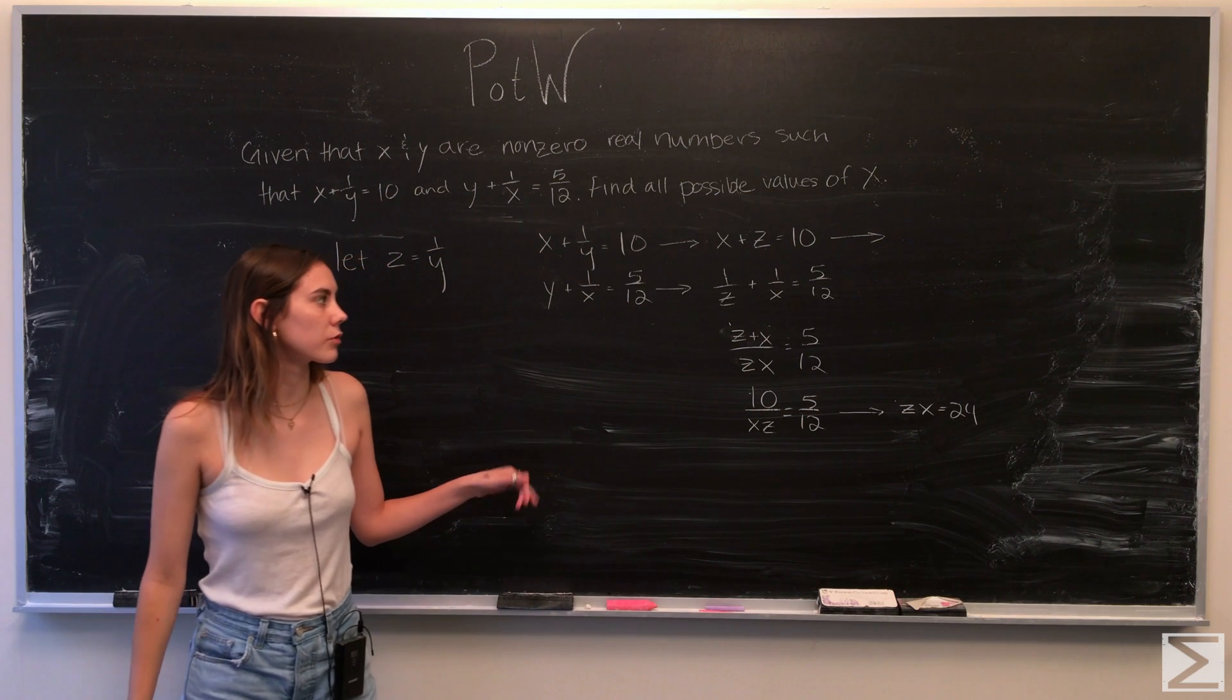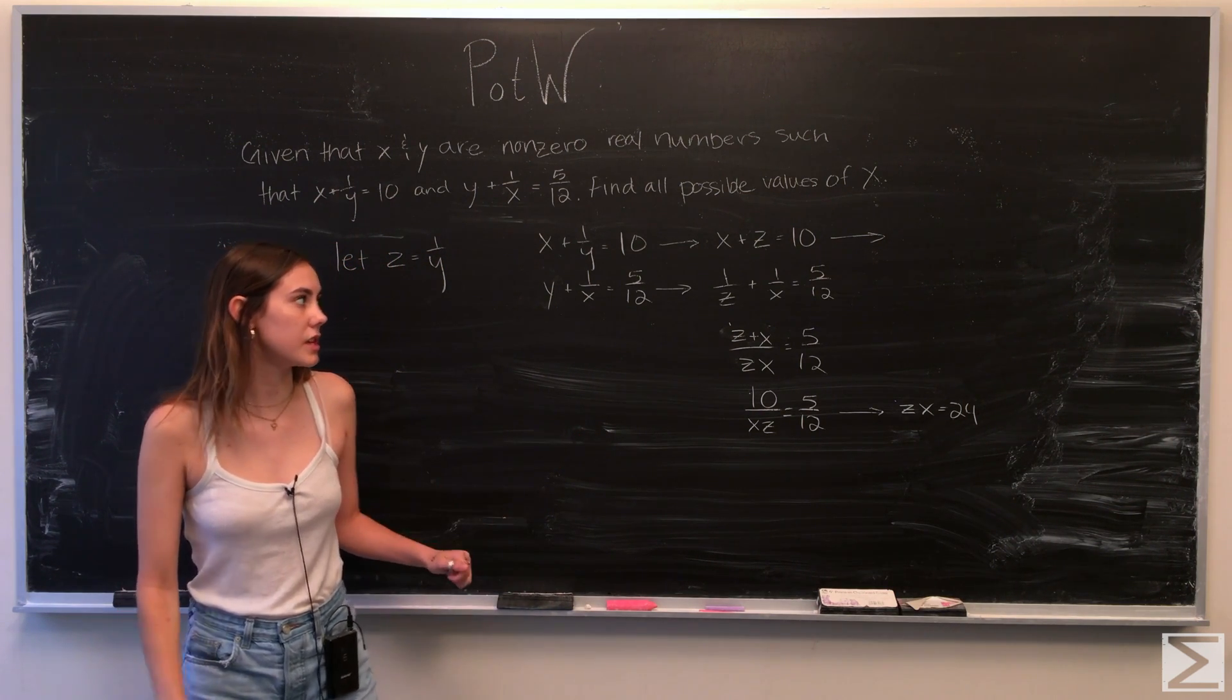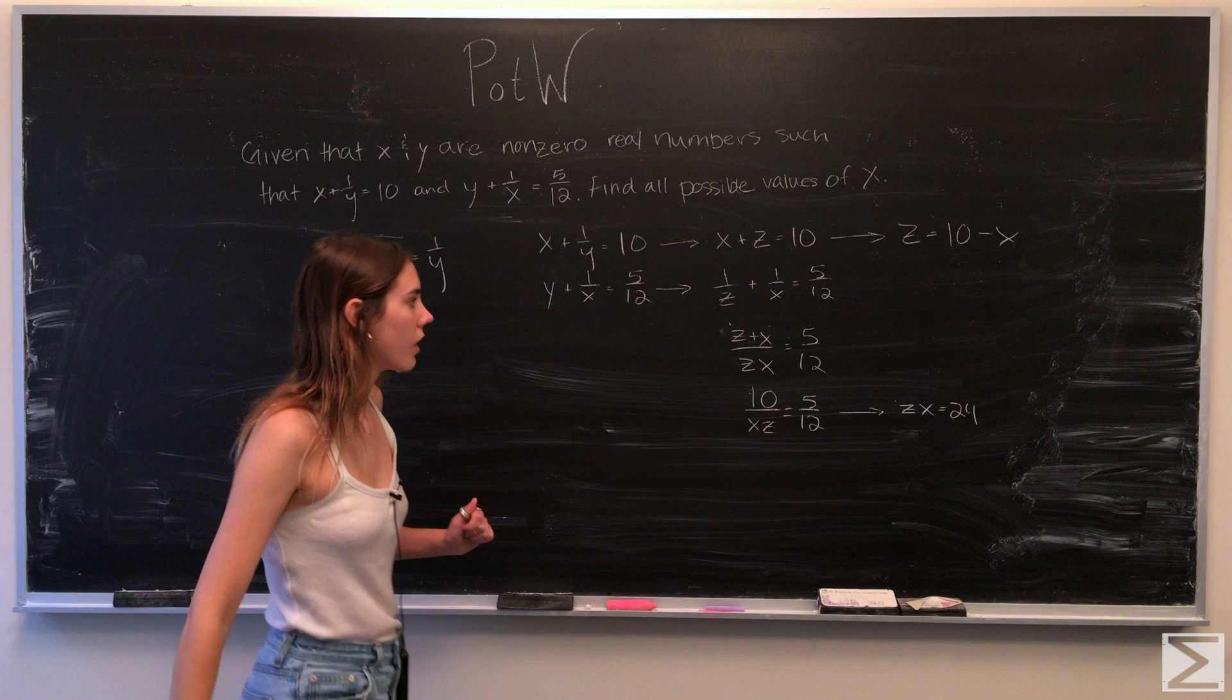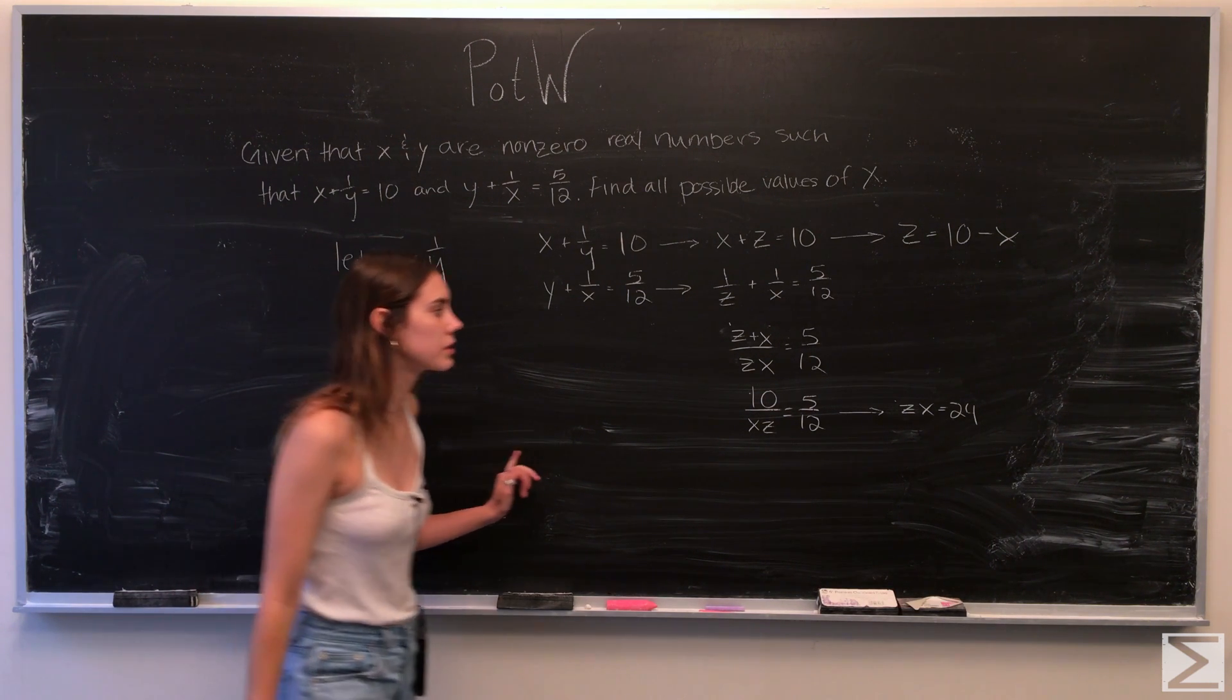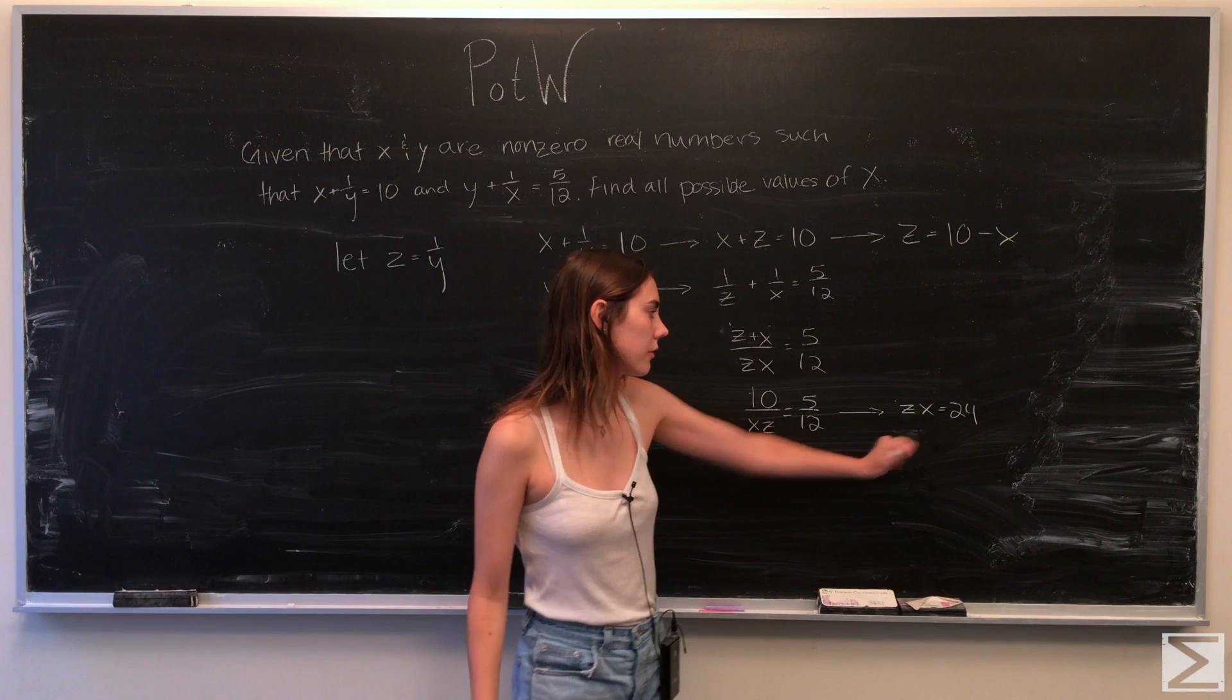Also from this top equation, we can rewrite it just to be for z. So now that we have an equation for what z is equal to, we can substitute it into zx is equal to 24.